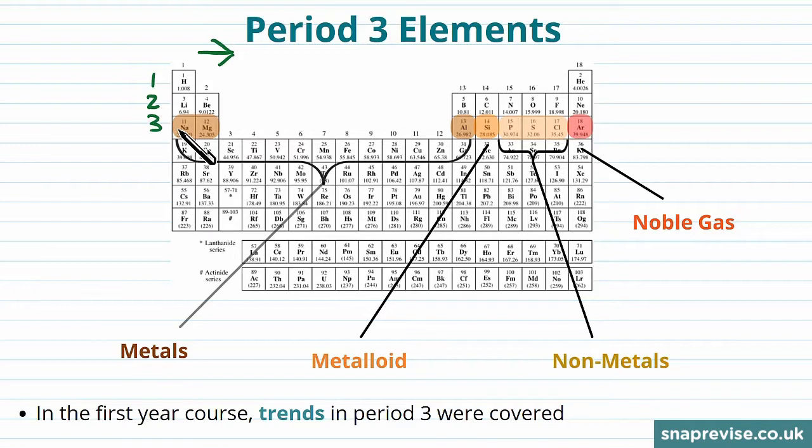So the first element in period 3 is sodium, then magnesium and aluminium make up metals, which conduct electricity and have high boiling points.